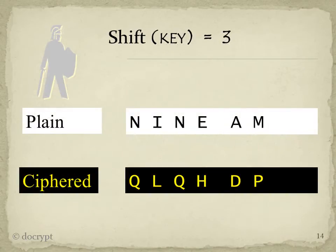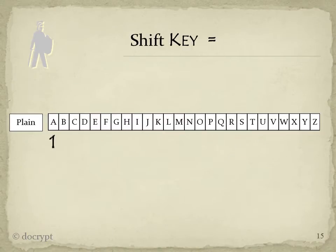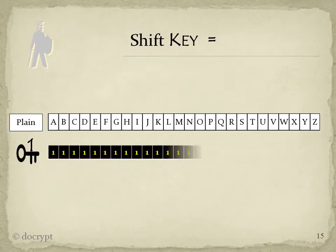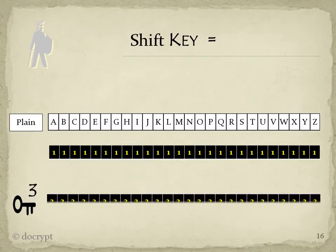Historians tell us that Caesar used a key of 3, and his less smart nephew Augustus used a key of 1. In any case, with a shift of 3, a plus 3 is d, so n becomes q, i becomes l, e becomes h, etc. We call the key shift 1 — it's really shift 1, 1, 1, 26 times. In the same way, a shift key of 3 is really 26 threes.